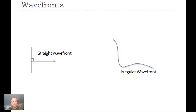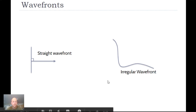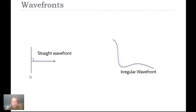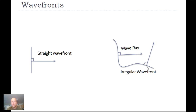If you have a straight wavefront, wave rays are again perpendicular to that wavefront. So if it's traveling to the right, the wave ray is perpendicular to the wavefront and the entire thing is just moving over. With an irregular wavefront, anywhere along it your wave ray is 90 degrees at that point — so if it's traveling in an awkward direction, the wave ray is still perpendicular at each point.